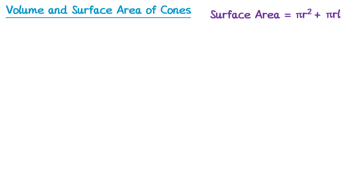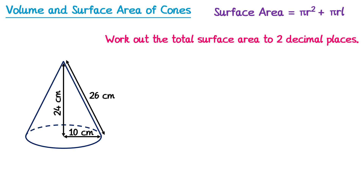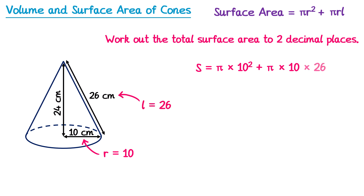Let's use this formula to find the surface area of this cone to two decimal places. Surface area = π × r squared. The radius is 10, so π × 10 squared, plus π × r (which is 10) × L (the slant height, which is 26). Notice we don't need the perpendicular height 24 at all. Typing this into the calculator and rounding to two decimal places gives 1130.97 centimetres squared.